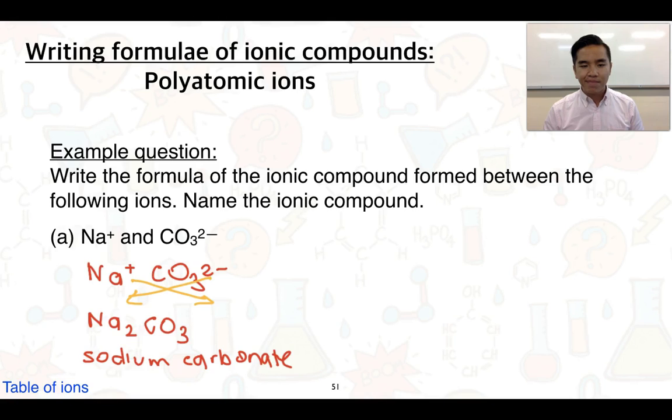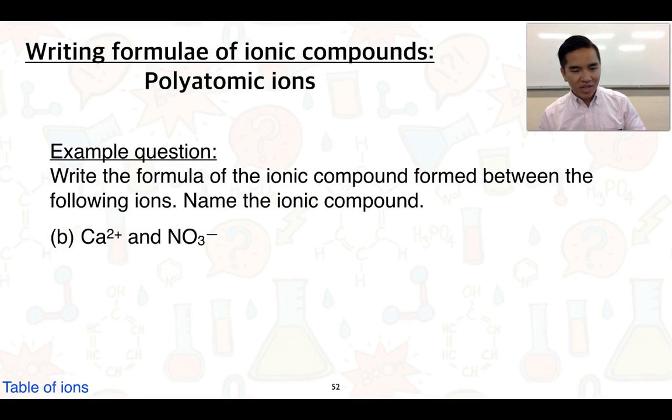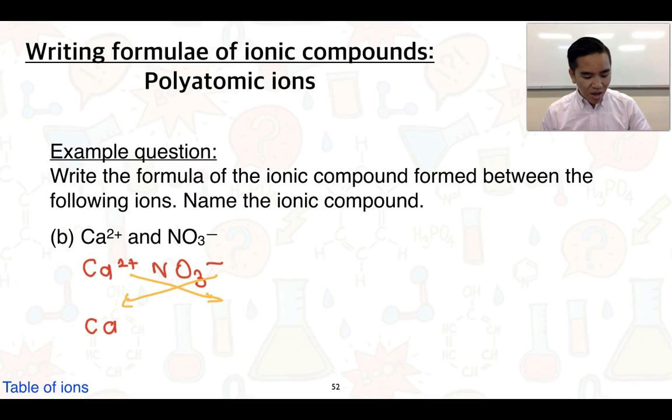The next one: Ca2+ and NO3-. Again, I think by now you guys are getting the hang of this, so cross them over. This one's going to work out a little bit differently because what we'll see is firstly the calcium will be one, so there's one calcium, but we need two of these NO3- groups or two of these nitrate groups. So to show that, what we have to do is put it in brackets. We put the NO3 in brackets and then we put a two outside the bracket to show that we've got two nitrate groups for every one calcium ion. The name of this is calcium nitrate.